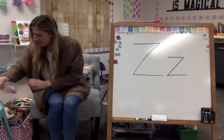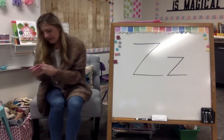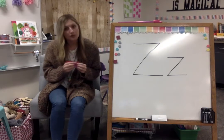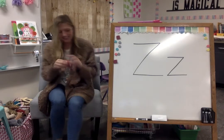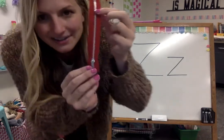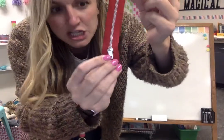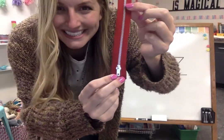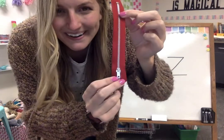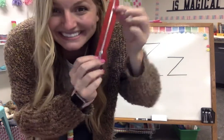Here is another one. This might be on your jacket, a sweatshirt, or even on your pants. Here it is — it goes up and down. Do you know what that's called? That's a zipper. Say zipper. Good job.